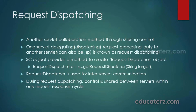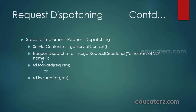Next is request dispatching — another servlet collaboration method where servlets share control. One servlet delegating request processing duty to another servlet is known as request dispatching. We need a ServletContext object to retrieve a RequestDispatcher object by calling getRequestDispatcher on the ServletContext. During request dispatching, control is shared between servlets within one request-response cycle. To get a RequestDispatcher, we call getRequestDispatcher passing the target servlet name or JSP name, and then call forward or include.